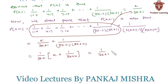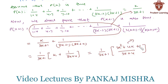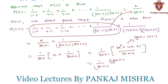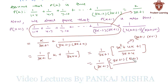Taking (3k+4) as the LCM, the numerator becomes 3k²+4k+1. Factorizing this polynomial gives two factors: (3k+1) and (k+1). So we have 1/(3k+1) × (3k+1)(k+1)/(3k+4). Canceling (3k+1) from numerator and denominator, we are left with (k+1)/(3k+4).